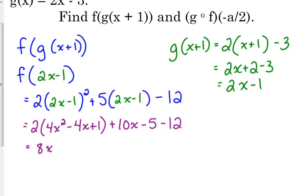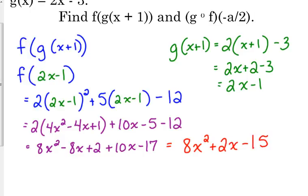Distribute the 2. 8x squared minus 8x plus 2 plus 10x. Go ahead and put the minus 5 and the minus 12 together. Minus 17. Final step. Combine any other like terms that we have. We have 8x squared. We've got a minus 8x plus 10x. That's plus 2x. And we've got a plus 2 minus 17. That's minus 15.